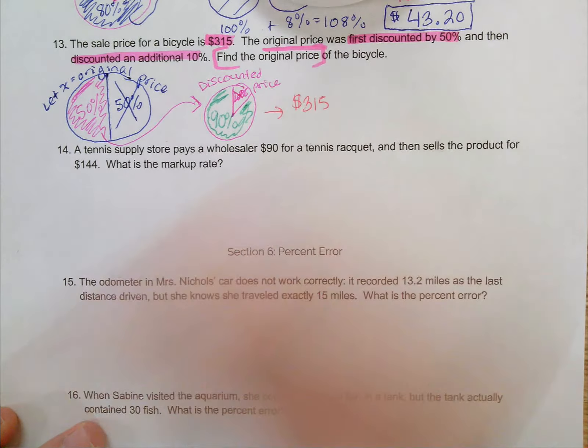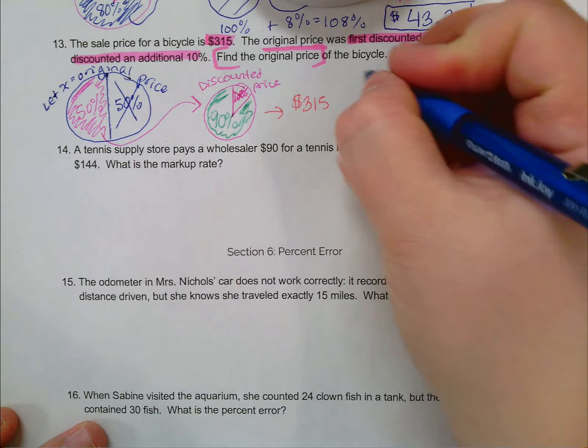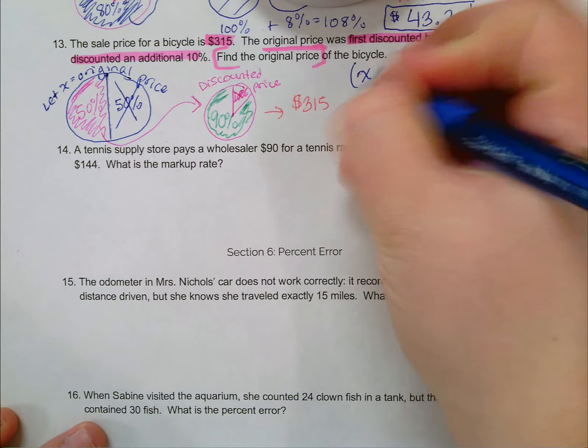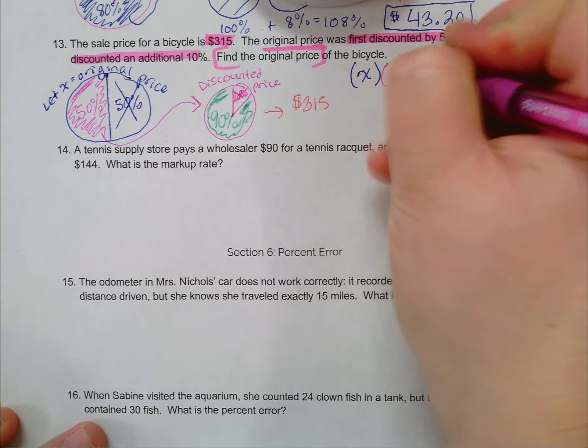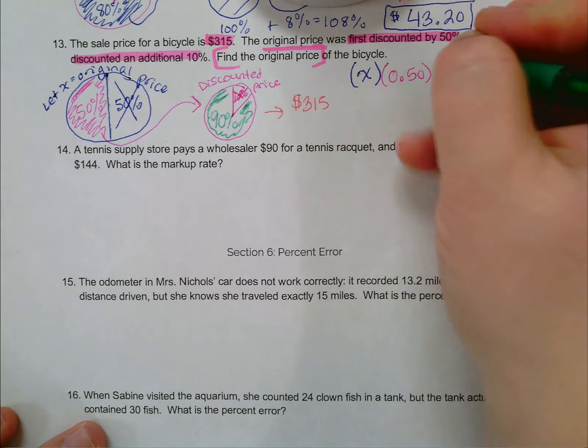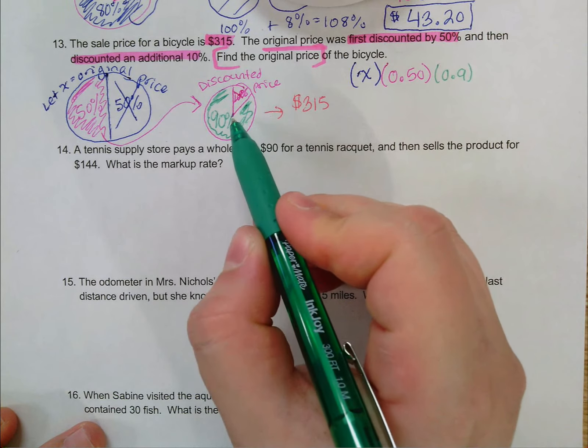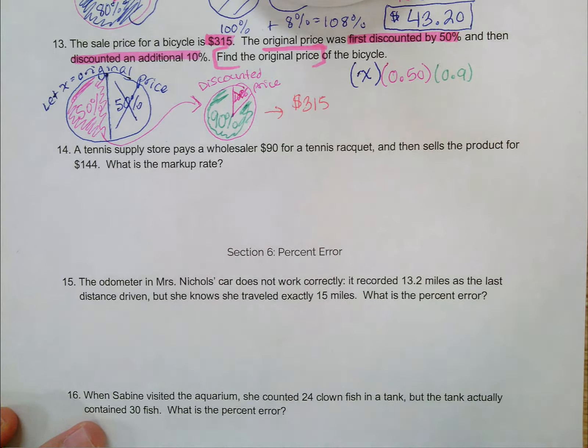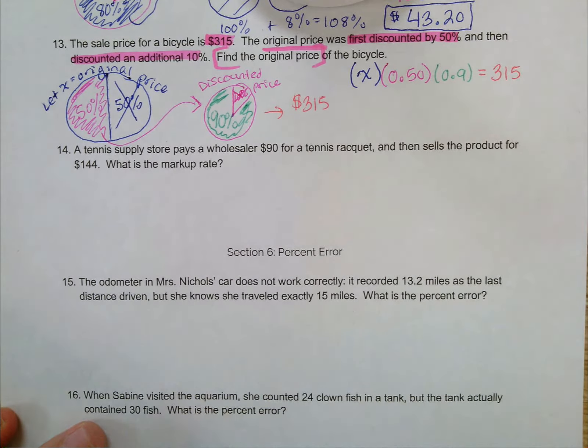So I'm going to have to set up an equation to solve this. Here's what I know. I know I started by paying X dollars, and then I know I took 50% of that X. So that gives me my discounted amount. And then after that, I took 90% of what was left because I got a 10% discount, so I paid for 90%. And when I did all that, my final amount was $315.